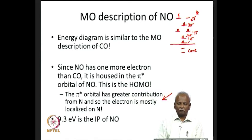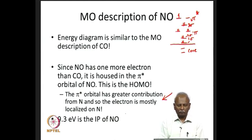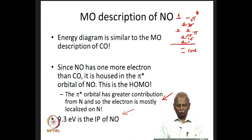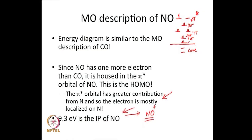This electron in the π* orbital can be readily removed; the ionization potential is about 9.3 electron volts. So the ionization potential of NO is 9.3 eV, and upon ionization it gives NO⁺. This gives us NO⁺, which is the molecule of interest because now NO⁺ is isoelectronic to carbon monoxide.